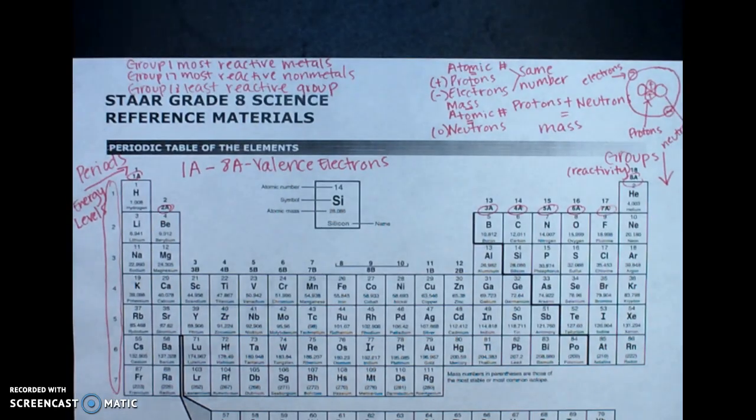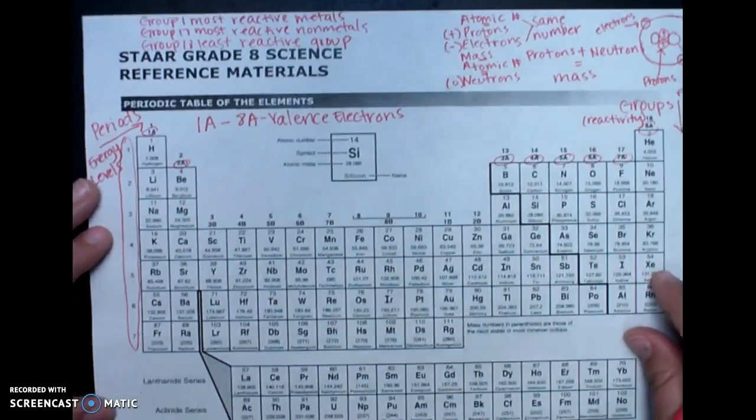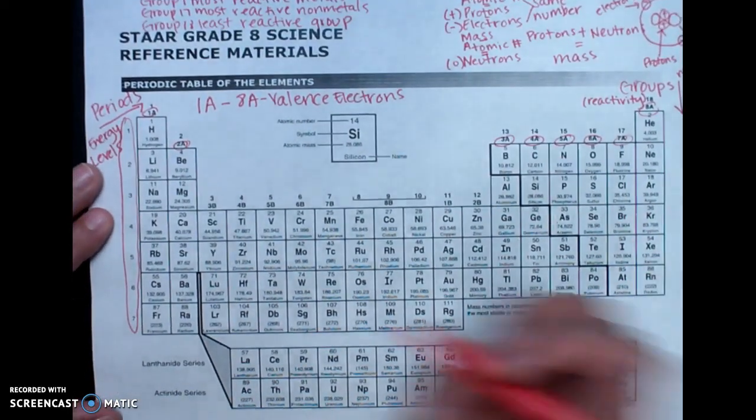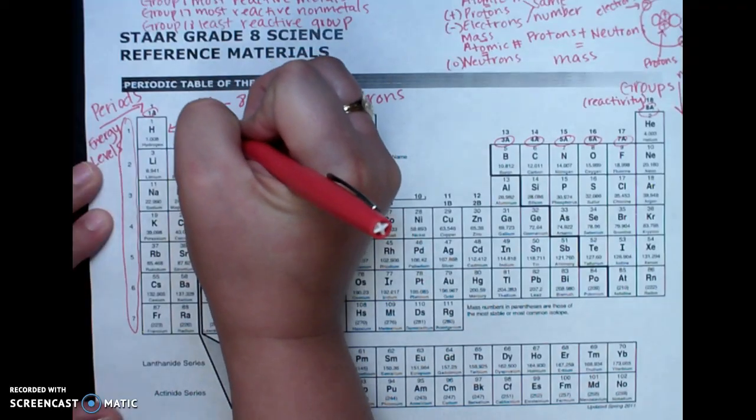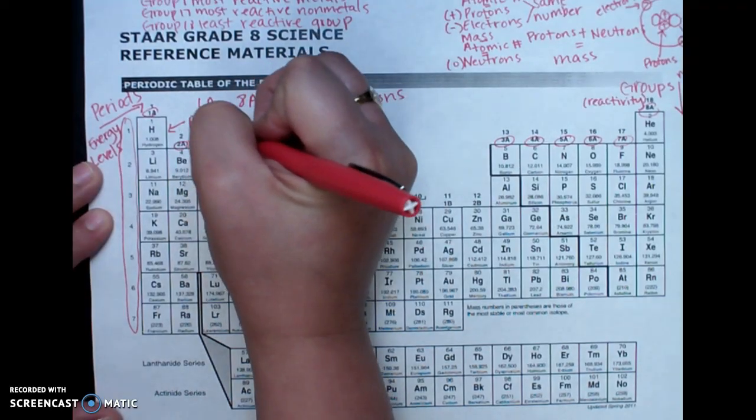So let's locate these on the periodic table. So the first one is group 1, our most reactive metals. Okay? These are our alkali metals. And they're located right here. So we're going to go ahead and put in there the alkali metals.